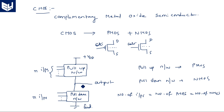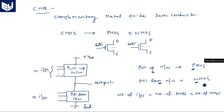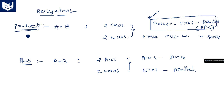The number of transistors in the pull-up network equals the number of transistors in the pull-down network, which also equals the number of inputs. The pull-up network is made up of PMOS transistors, and the pull-down network is made up of NMOS transistors. A helpful mnemonic: pull-UP uses P (PMOS), pull-DOWN uses N (NMOS).